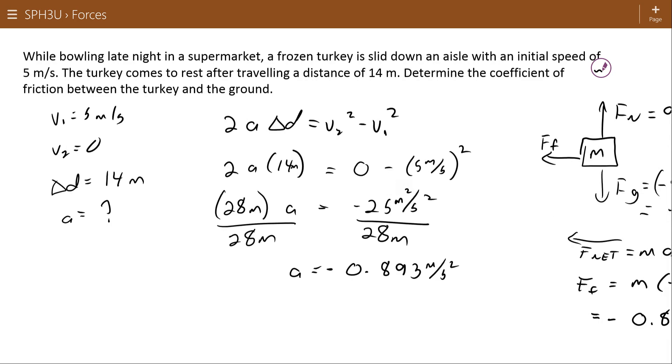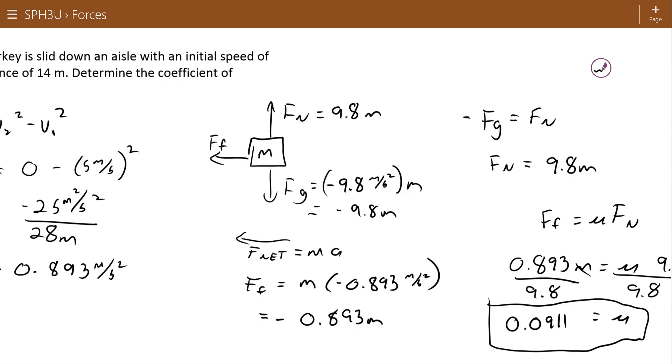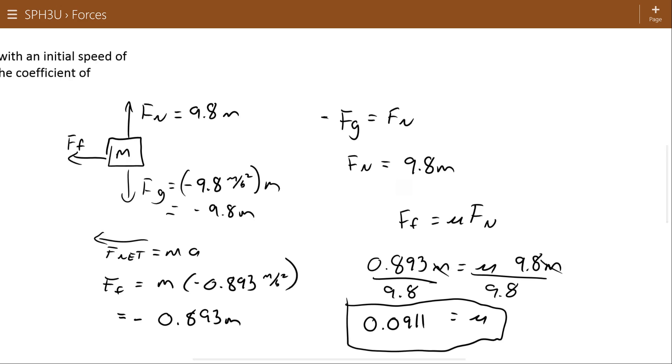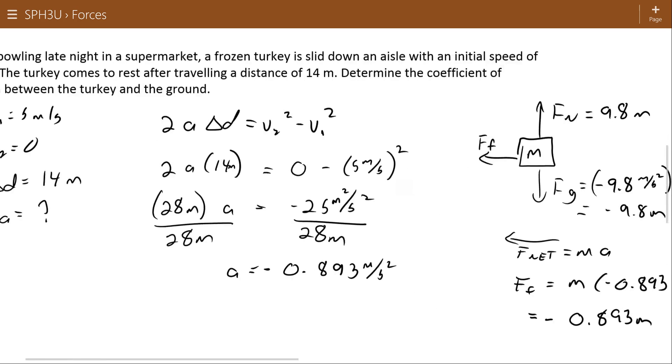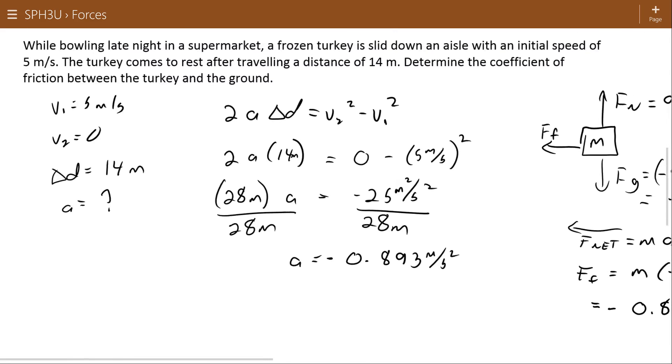So you take the kinematics information, or the motion information, find an acceleration, use that Newton's second law to get the force of friction. And then with the force of friction and the normal force, assuming that you're on a flat surface, the normal force is equal to the force of gravity, then you can find the coefficient of friction. That's all for kinetic friction. I'll do some more extension problems in another video, but that's enough for now.